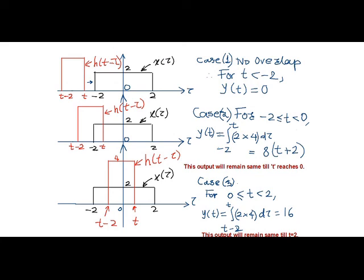After performing the integration and substituting the limits of integration, output becomes 8 into t plus 2, and this output will remain same as long as this t reaches up to 0.